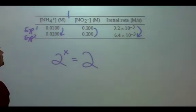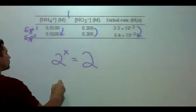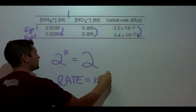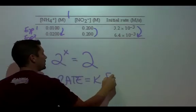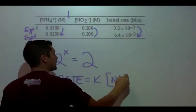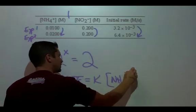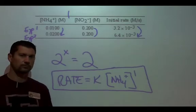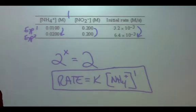Okay? So what would my rate law be? Rate equals K ammonium to the first. Now let's try a harder one.